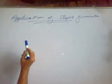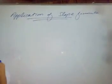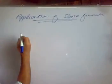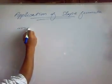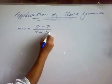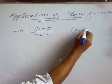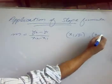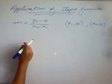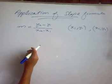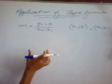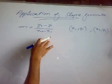Assalamu alaikum students. In this lecture we will study about the application of the slope formula. We have already learnt the slope formula in the previous lecture. The slope formula is denoted by m and is equal to (y2 minus y1) over (x2 minus x1), for two points (x1, y1) and (x2, y2). We will discuss how to find inclination and slope of two points.